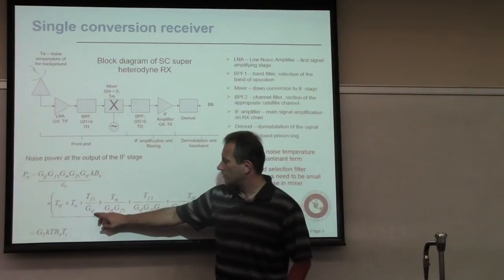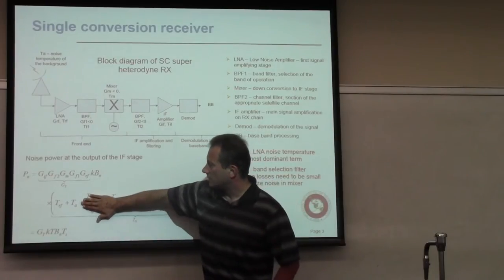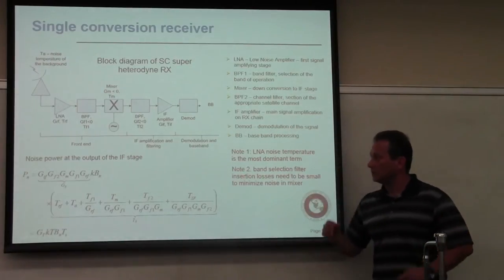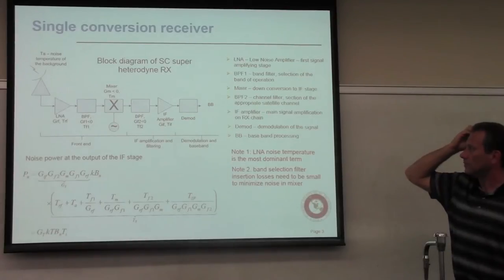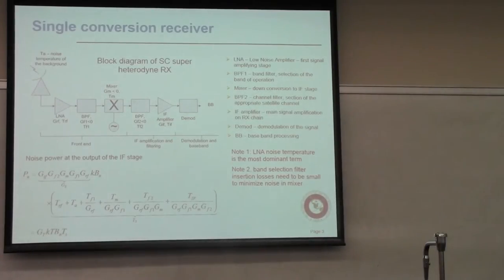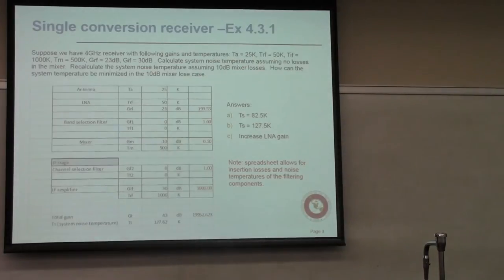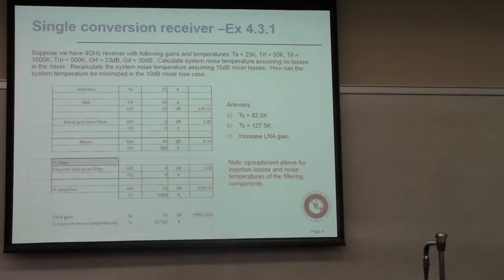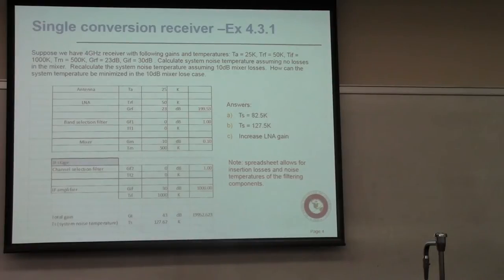When you translate that into equations, you end up with noise power at the output as the sum of all the gains times the bandwidth times the Boltzmann constant times the equivalent noise temperature. The equivalent noise temperature accounts for whatever comes through the antenna, whatever is generated by each stage, scaled by the stage gain. The dominating factor is the antenna noise and noise figure of the front-end amplifier when the front-end gain is large.